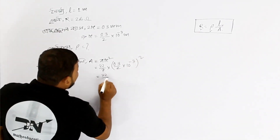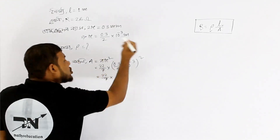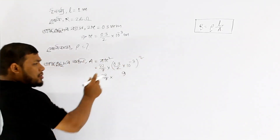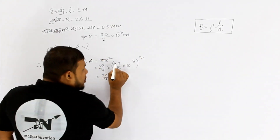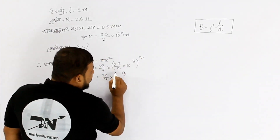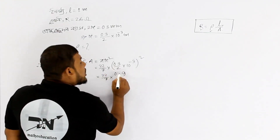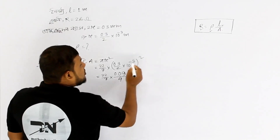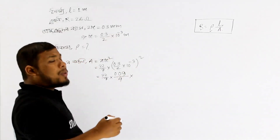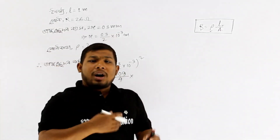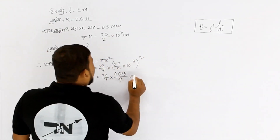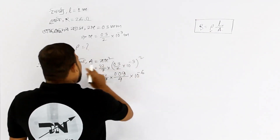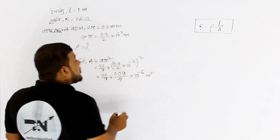22 divided by 7 multiplied by 0.3 squared. 2 squared equals 4, and 10 to the power minus 3 into 2 equals 10 to the power minus 6.